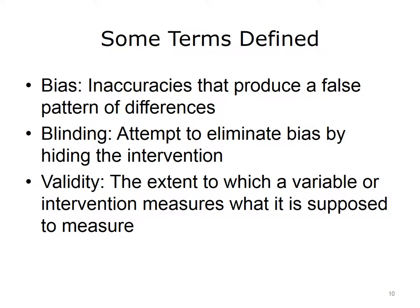There are some common terms used when discussing evidence-based medicine. The first is bias — inaccuracies that produce a consistently false pattern of differences between observed and true values. The second is blinding — an attempt to eliminate bias by hiding the intervention from the patient, the clinician, and even the researchers interpreting the results. Some interventions, such as surgery, cannot be blinded from the patient or clinician, but can be blinded from researchers. The third term is validity — the extent to which a variable or intervention measures what it is actually supposed to measure.